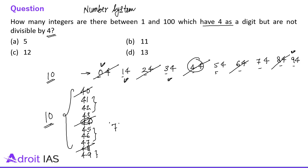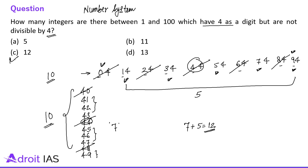Counting the remaining numbers: 8, 9, 10, 11, and 12 — so 5 more numbers. The total numbers from 1 to 100 which have 4 as a digit but are not divisible by 4 is 12. This question belongs to number system, and the ideal solving time is 70 to 80 seconds because you have to write and then count.